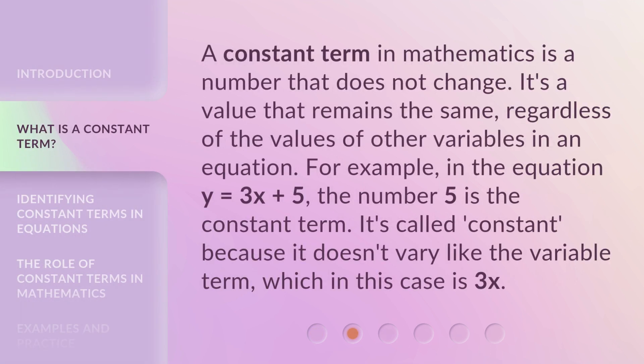A constant term in mathematics is a number that does not change. It's a value that remains the same, regardless of the values of other variables in an equation. For example, in the equation y = 3x + 5, the number 5 is the constant term. It's called constant because it doesn't vary like the variable term.